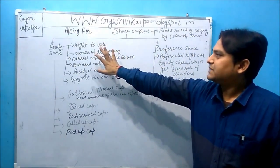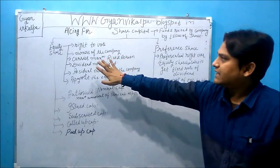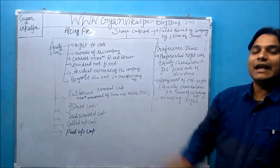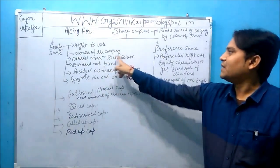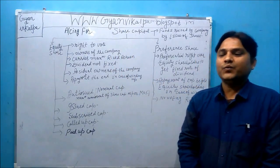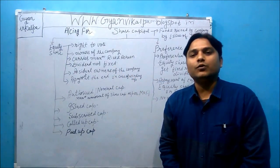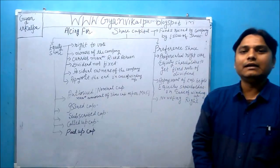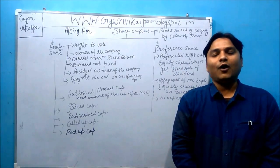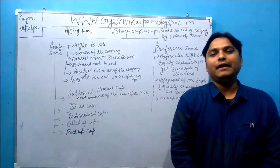Equity shares give their holders the right to vote, and holders of equity shares are generally known as the owners of the company. Equity shares carry maximum risk and return. In equity shares, dividends are not fixed, and the holders of equity shares are also known as residual owners of the company.